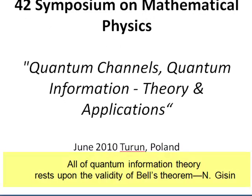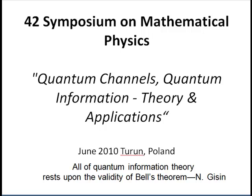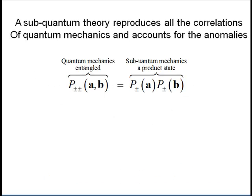It is often stated that all of quantum information theory rests upon the validity of Bell's theorem, but in this talk I will give an alternate explanation for long-distance communication and quantum channels. In particular, I will show that a sub-quantum theory reproduces all the correlations of quantum mechanics, as well as accounting for the anomalies. This sub-quantum theory is both local and realistic. It is definitely not classical. From quantum mechanics, it is only possible to calculate the EPR coincident probabilities using an entangled state. I will do it from a sub-quantum product state.